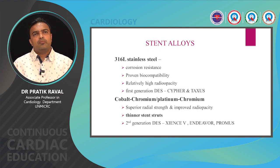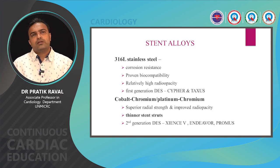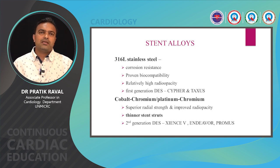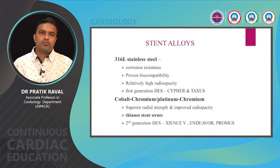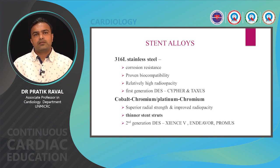The most commonly used metals in stent scaffolds are stainless steel and cobalt chromium as well as platinum chromium alloys. The main advantage of stainless steel is corrosion resistance, proven biocompatibility, and relatively high radiopacity, but this comes at a cost of higher strut thickness. Cobalt chromium and platinum chromium alloys achieve superior radial strength and radiopacity with much thinner struts, and currently these alloys are used exclusively in newer generation stents.